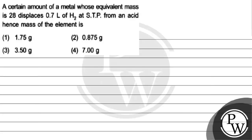Hello Bacho, let's read this question. The question says a certain amount of metal whose equivalent mass is 28 displaces 0.7 liters of hydrogen at STP from an acid. Hence, mass of the element is: option 1, 1.75 gram; option 2, 0.875 gram; option 3, 3.50 gram; option 4, 7 gram. The key concept for this question is equivalent mass.